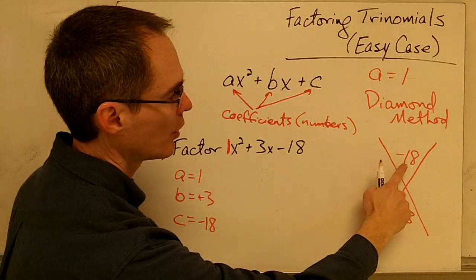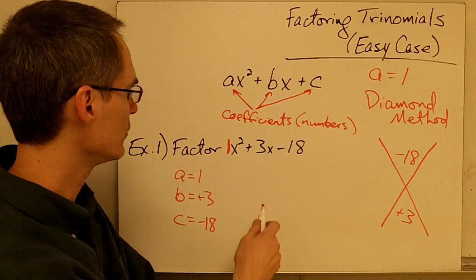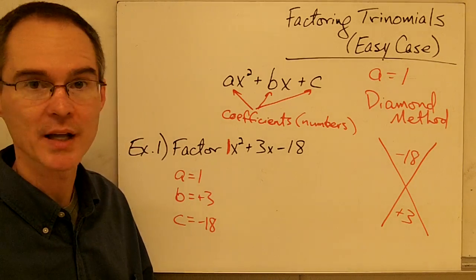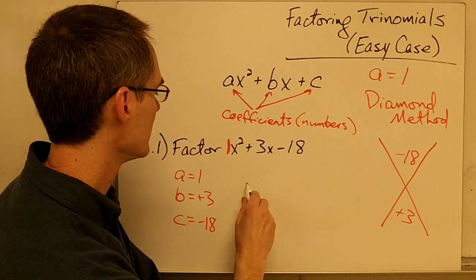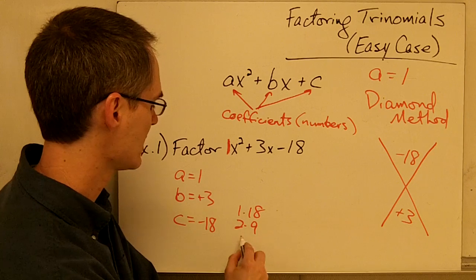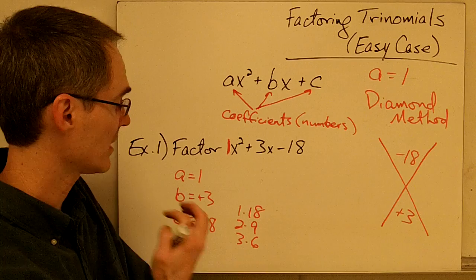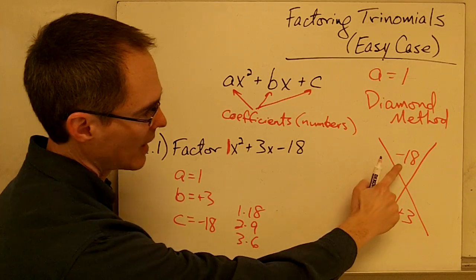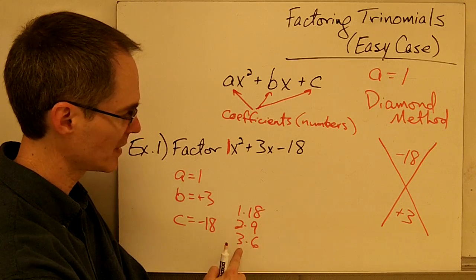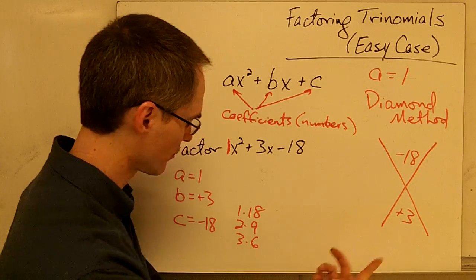Let's think about what numbers multiply together to give me negative 18. Let me ignore the sign for now and just ask: what numbers multiply to give me 18? There would be 1 and 18, 2 and 9, and 3 and 6. Since I need negative 18, one of these numbers will have to be positive and one will have to be negative, and I want the pair that combines to give me positive 3.